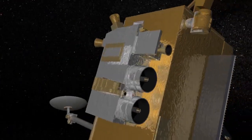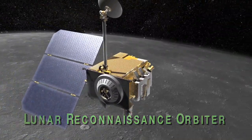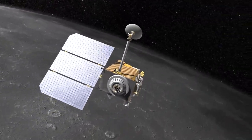For those that don't know, LRO is the Lunar Reconnaissance Orbiter. It's a NASA spacecraft that's been orbiting the moon since June of 2009, taking high-resolution pictures of the surface.